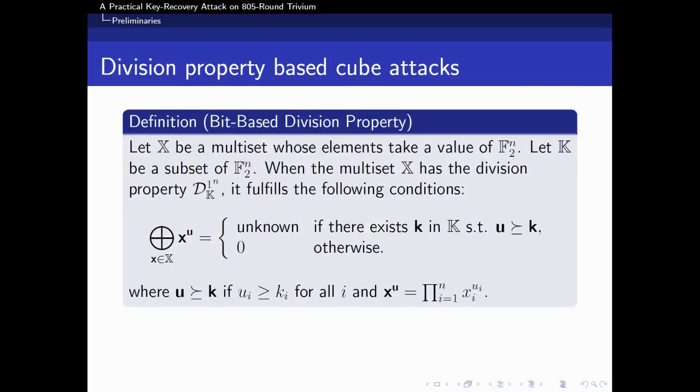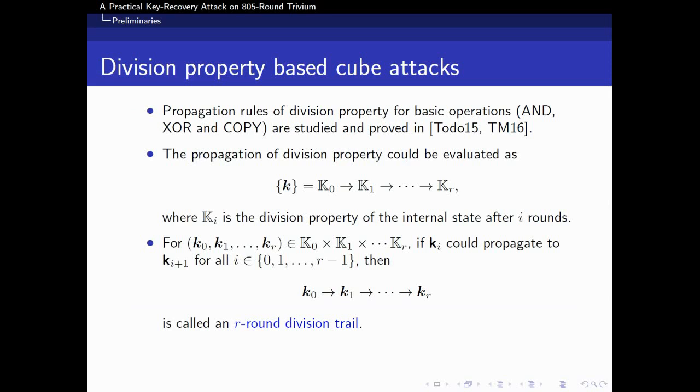The definition of bit-based division property was shown as follows. In the papers published in Crypto 2015 and FSE 2016, Todo and Morii studied the propagation rules of division property for basic operations like XOR and COPY. Furthermore, for a round cipher, the propagation of division property could be evaluated by figuring out the division property of internal states. Then, the concept of division trail was proposed, which could propagate through the whole round cipher. The detailed definition is shown in our slide.